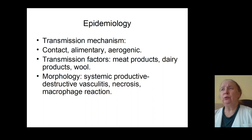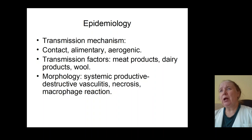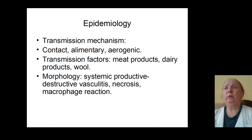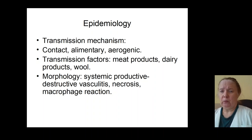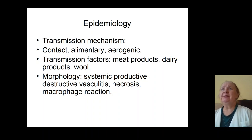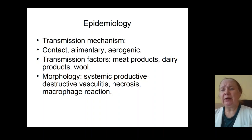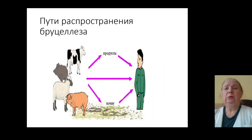There is destruction of connective tissue, arthritis, periarthritis, destruction of nerve endings, destruction of genital organs, and sometimes bacteria penetrate the hematoencephalic barrier and cause formation of meningitis and meningoencephalitis.